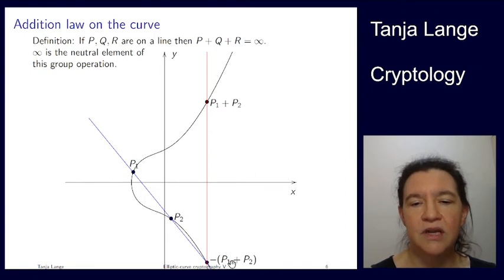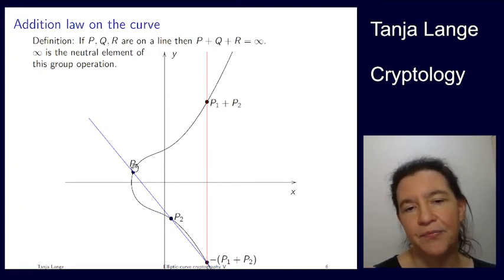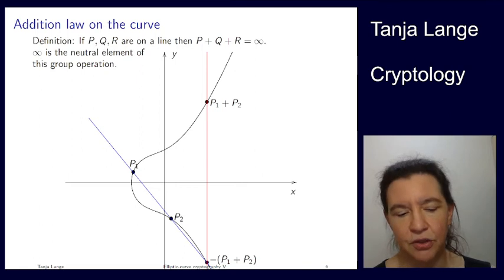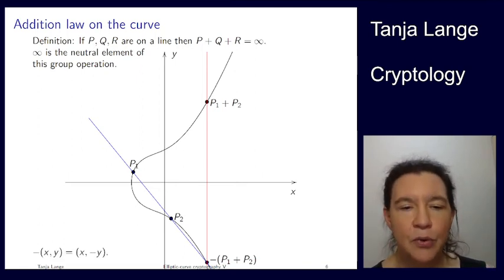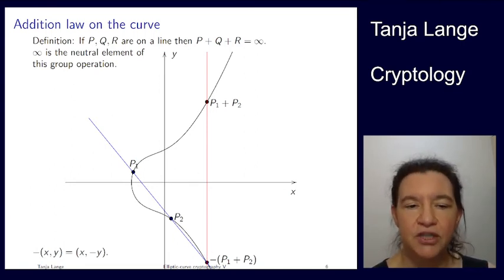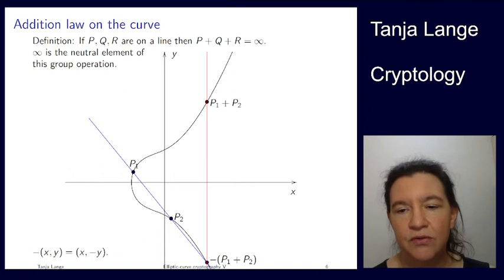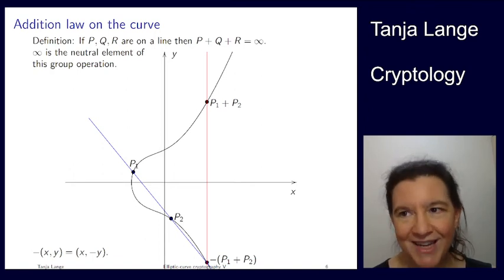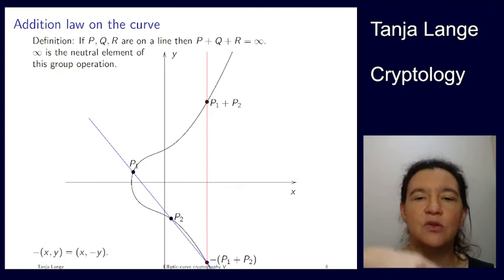Now, how do I define the group operation? This is something which some people like about Weierstrass curves, that you have this geometric addition law. The definition says that any points that are on the same line add up to zero, add up to the neutral element. If you look at the negative of a point, it is the point that is mirrored with respect to the x-axis. So in the Weierstrass addition law, x stays the same and y flips the sign.